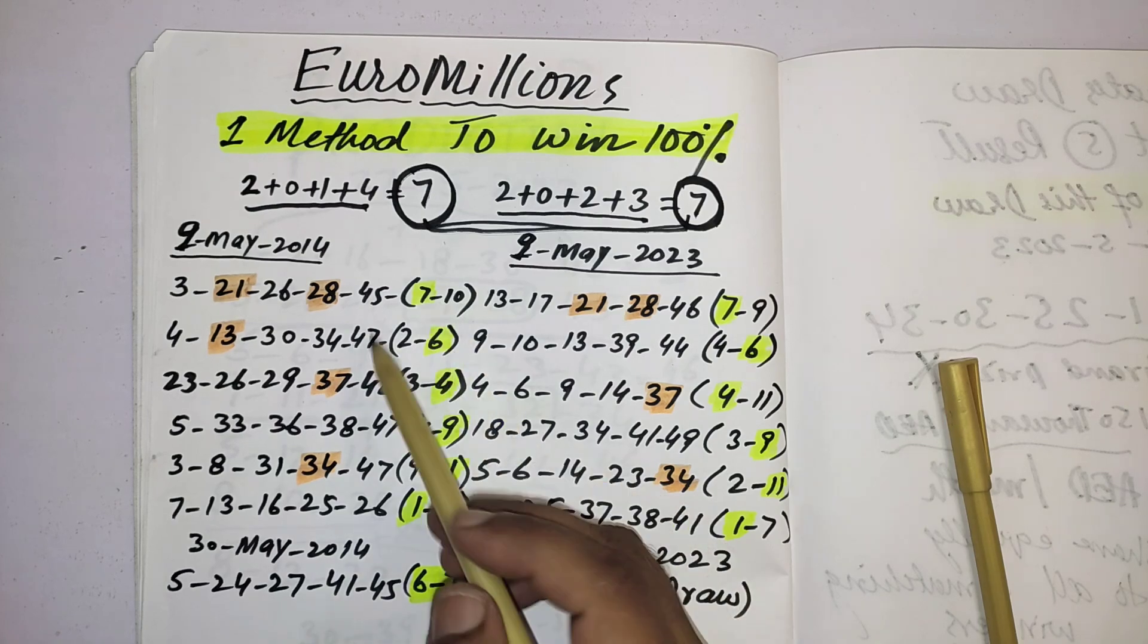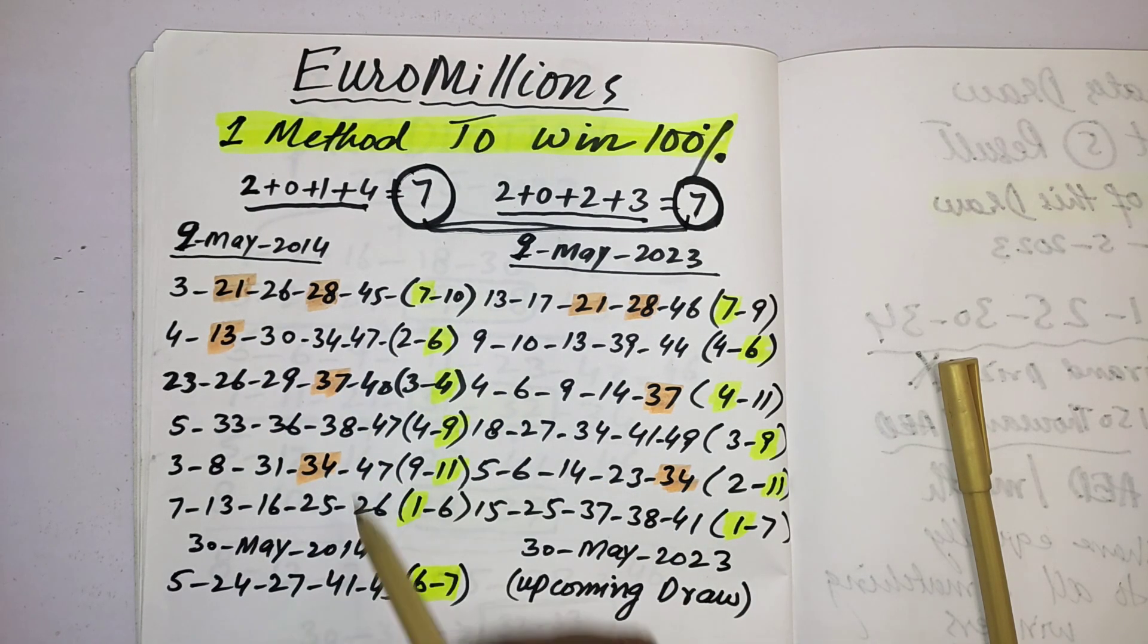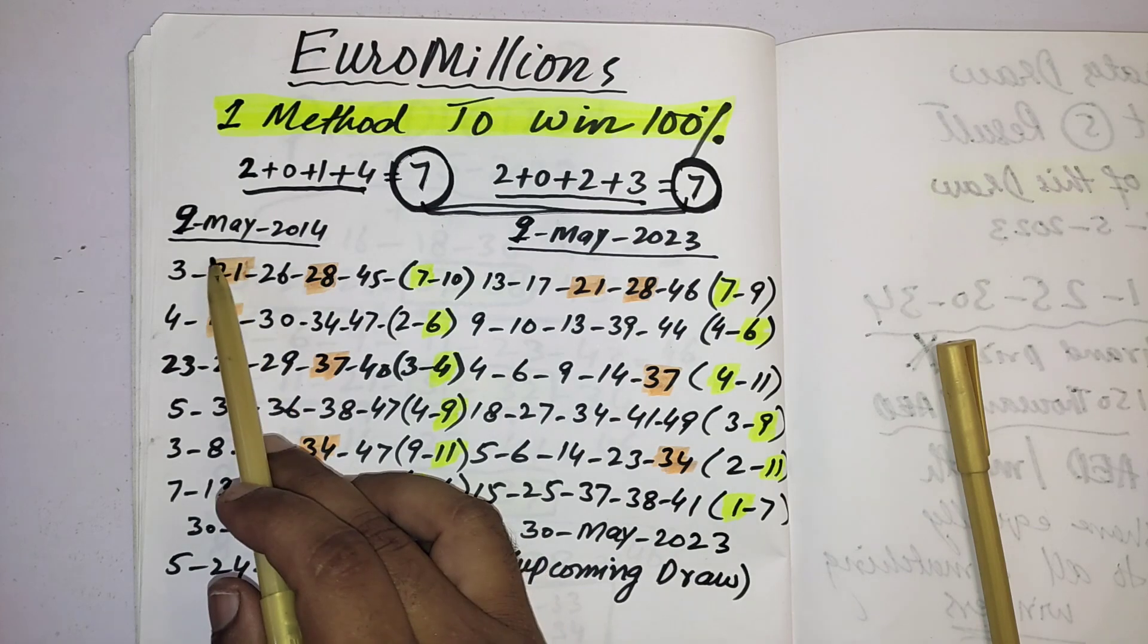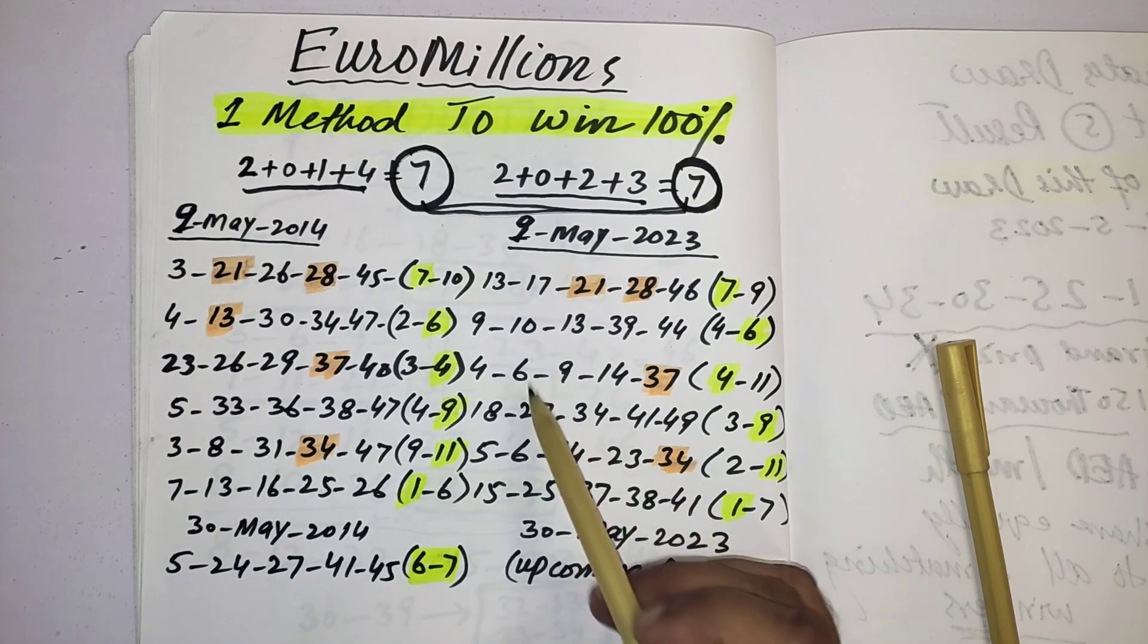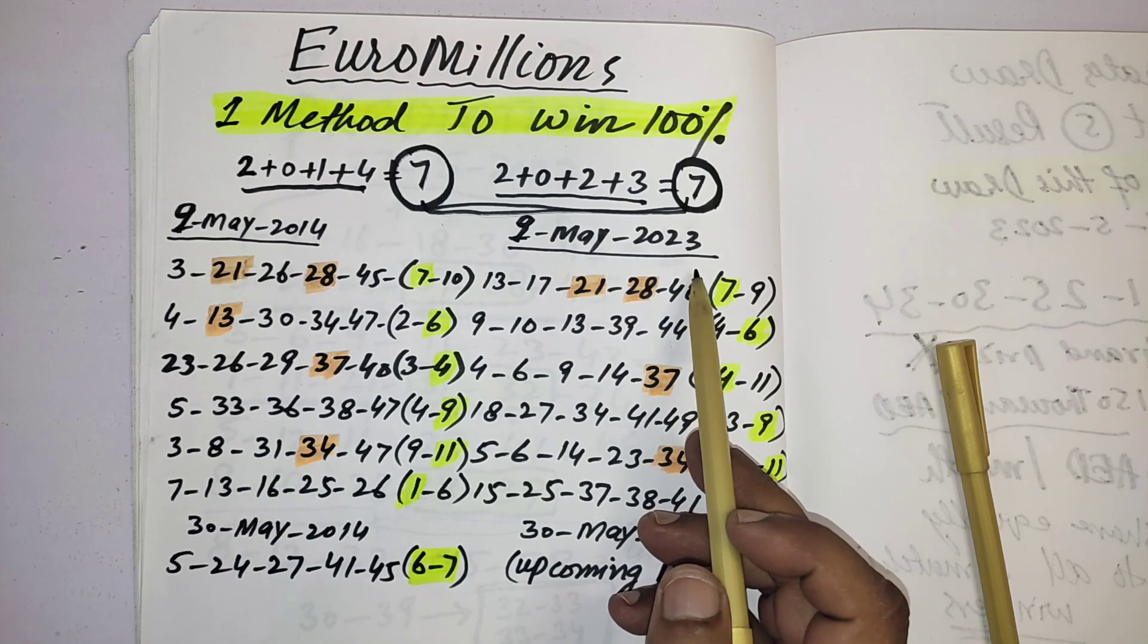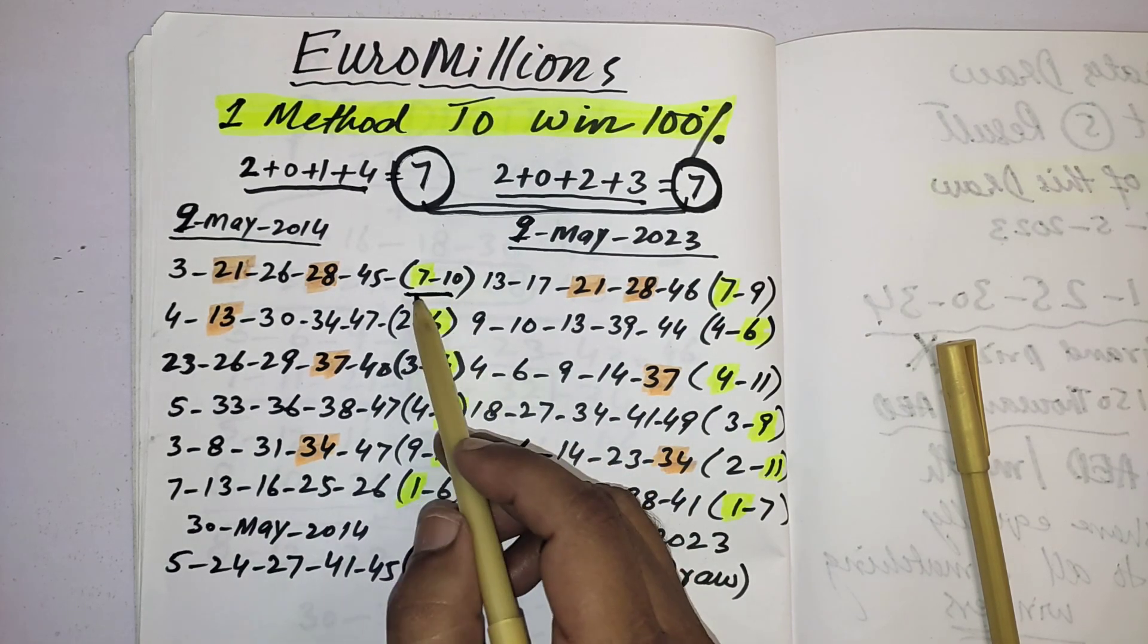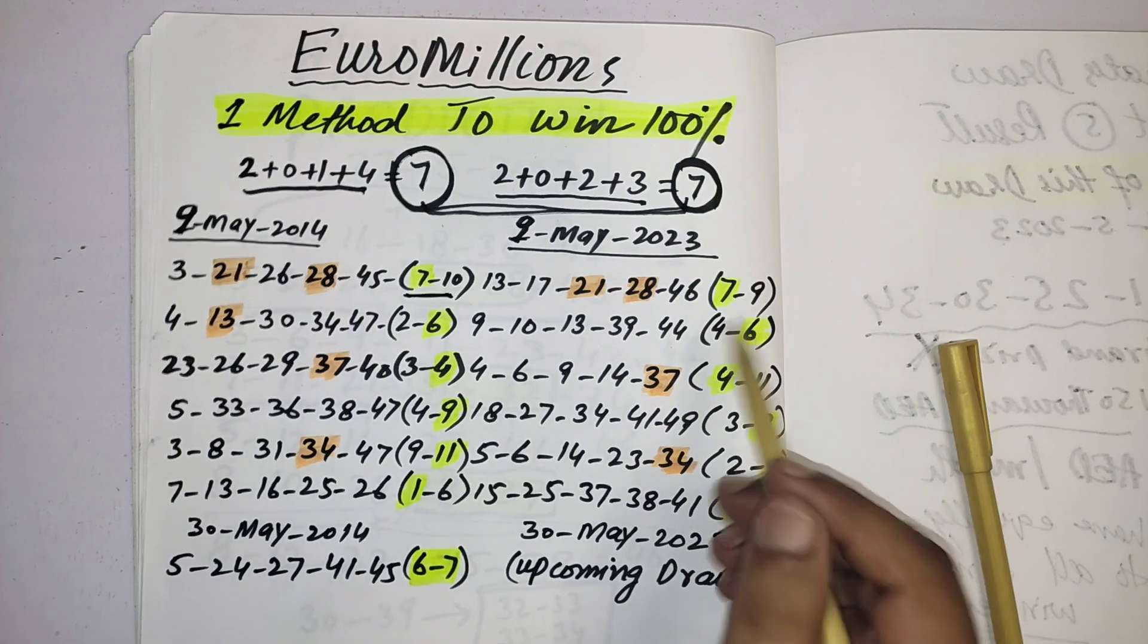These results start from 9th May 2014, and the same, these results start 9th May 2023. If you can see, these are the lucky star numbers in 2014 and these are the lucky star numbers in 2023.